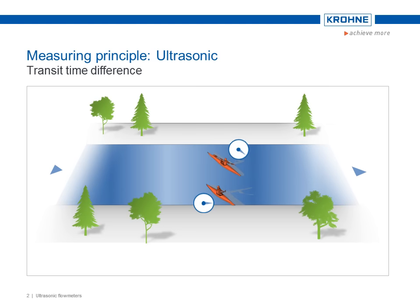The canoe moving in the direction of the flow needs considerably less time to reach the other riverbank than the canoe moving against the direction of the flow.